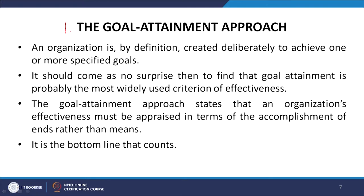An organization is by definition created deliberately to achieve one or more specified goals. It should come as no surprise then that goal attainment is probably the most widely used criteria of effectiveness. The goal attainment approach states that an organization's effectiveness must be appraised in terms of the accomplishment of ends rather than the means.